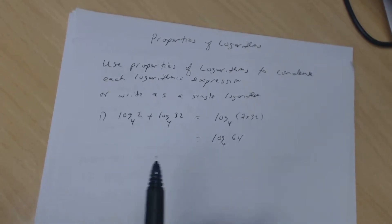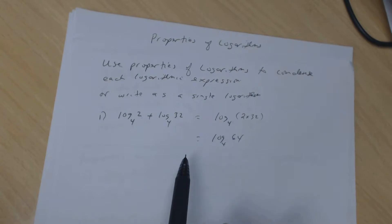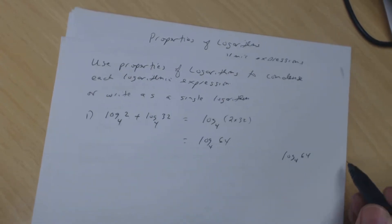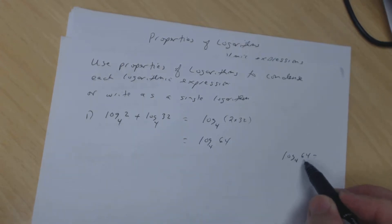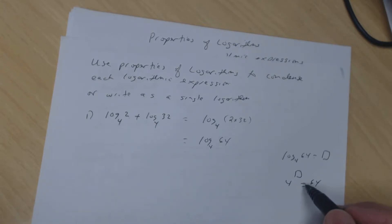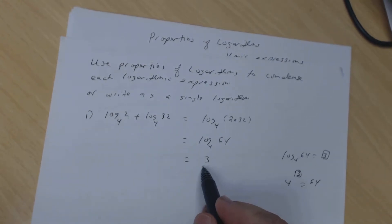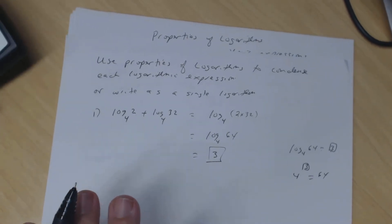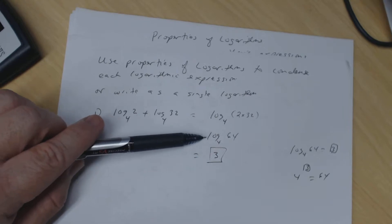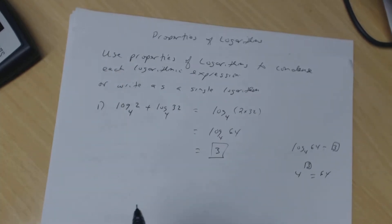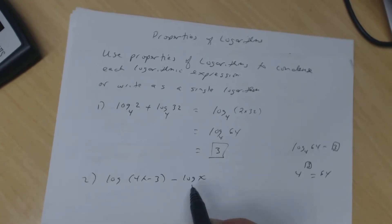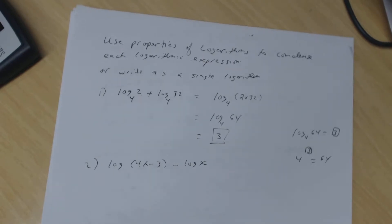Now, if you can simplify without a calculator, do so. The logarithm is an exponent, so ask: 4 to what power is 64? Since 4 cubed is 64, the answer is 3. Don't leave it as a single logarithm if you can go further — you won't get full credit. Number two: log of (4x minus 3) minus log of x.